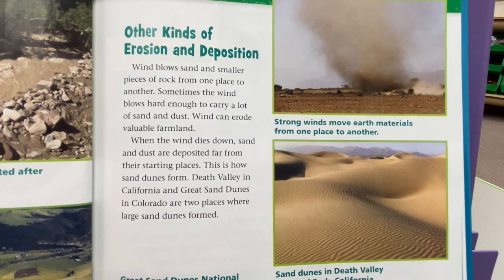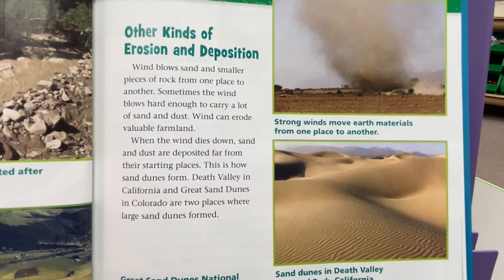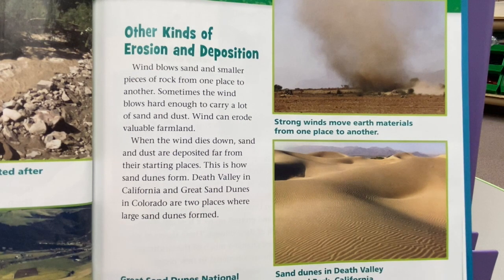Other kinds of erosion and deposition. Wind blows sand and smaller pieces of rock from one place to another. Sometimes the wind blows hard enough to carry a lot of sand and dust. Wind can erode valuable farmland. When the wind dies down, sand and dust are deposited far from their starting places. This is how sand dunes form. Death Valley in California and Great Sand Dunes in Colorado are two places where large sand dunes formed.